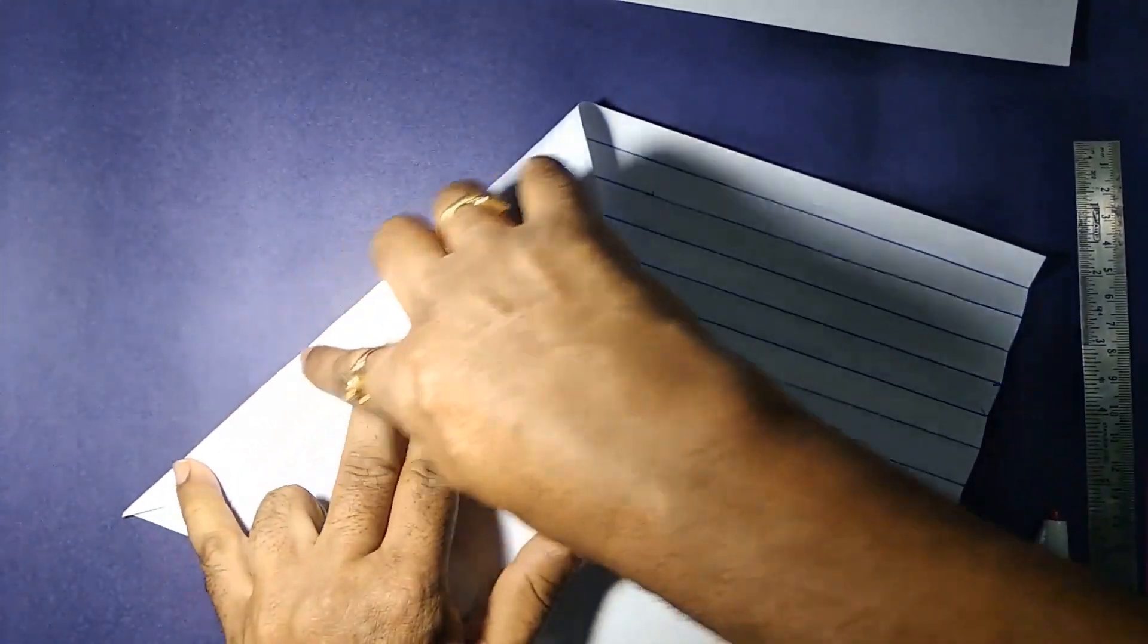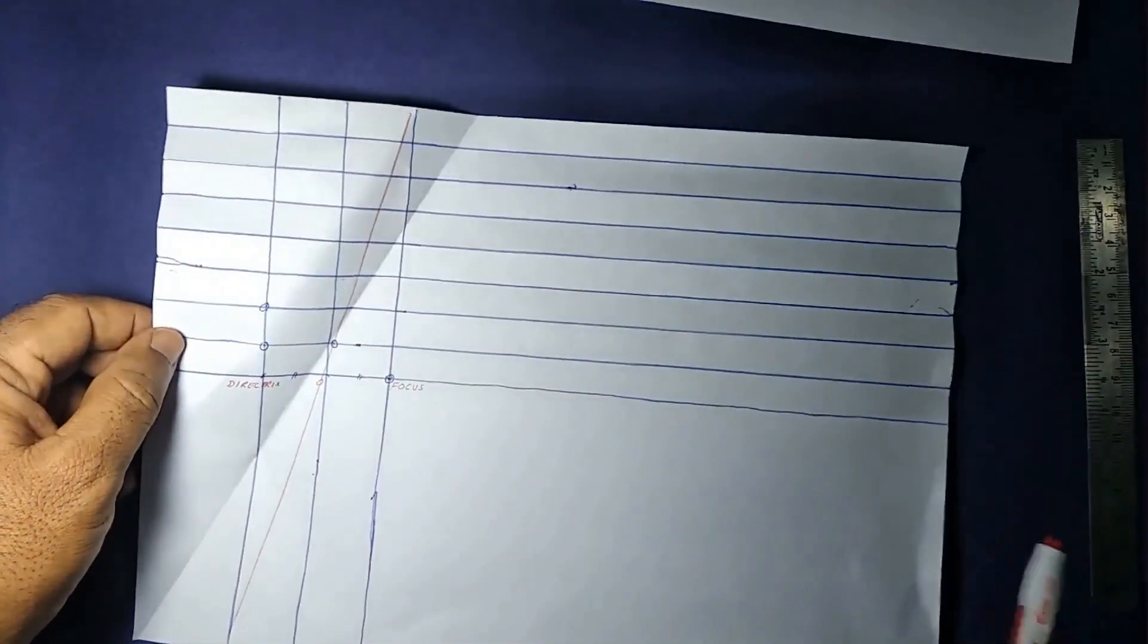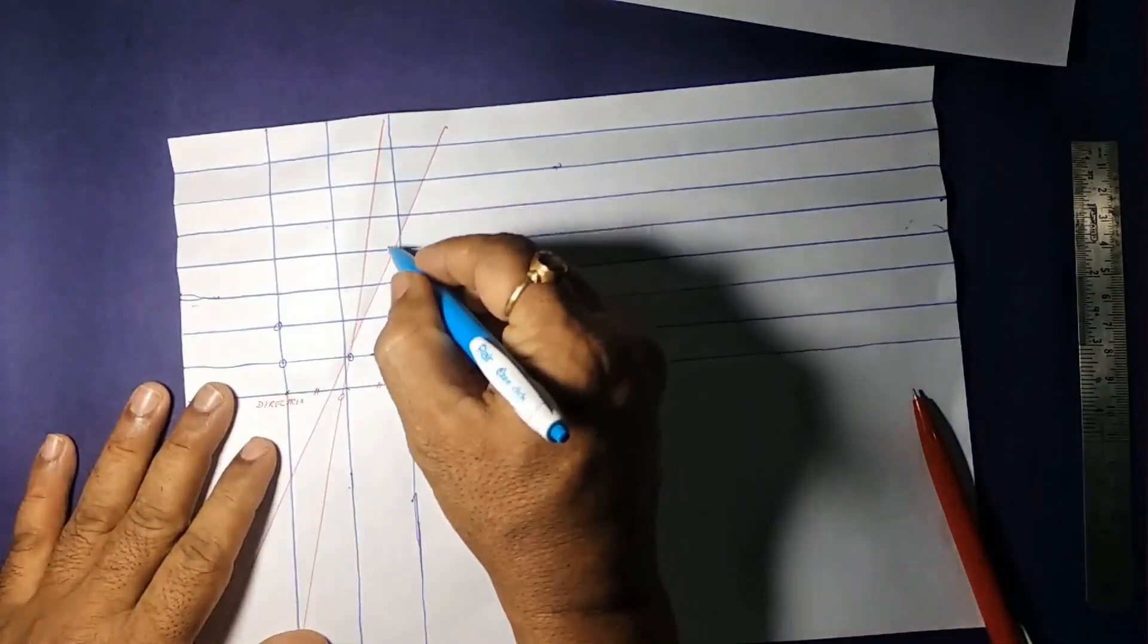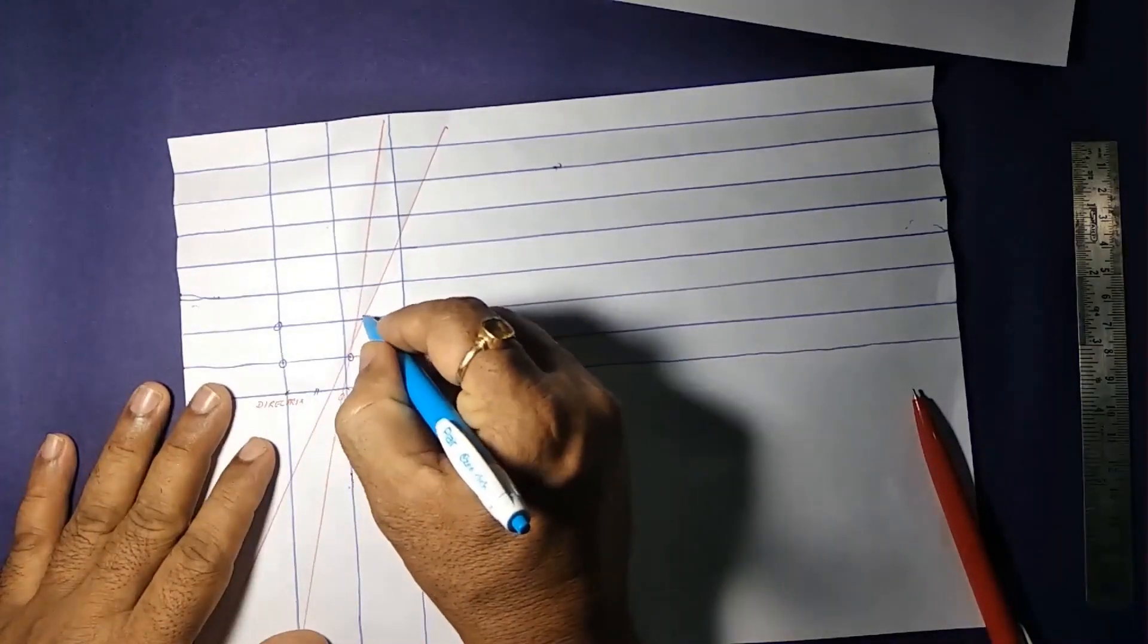This is the new one. And see where this new line is intersecting our horizontal line. That horizontal line where we have marked the point on the directrix. Yes, here. This is the point.